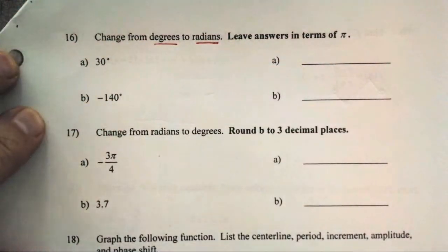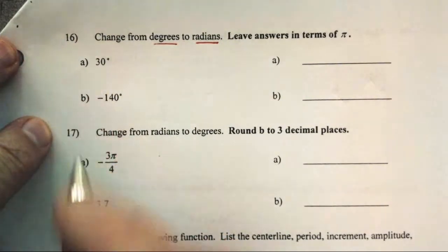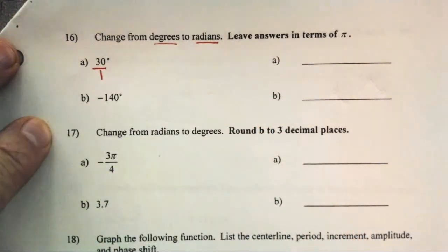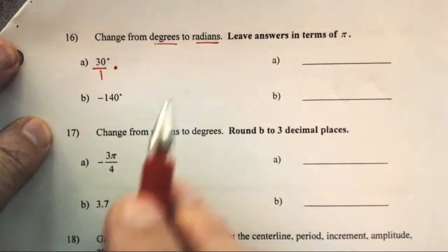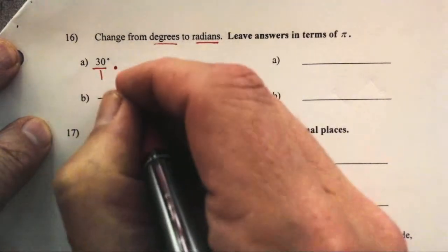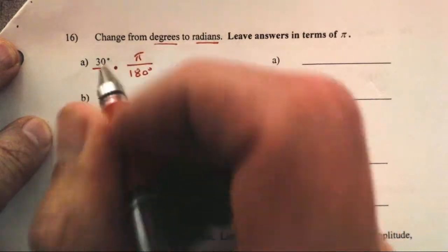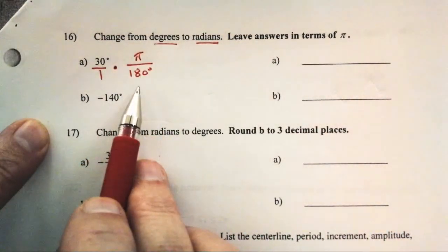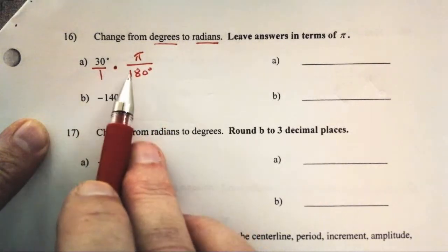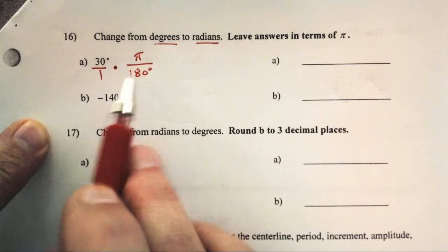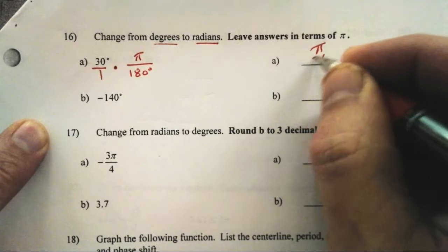We may recognize 30 degrees already as one-sixth pi, and that's great. But the process is: we treat this like chemistry when we want to cancel units. This is 30 degrees, and I want to cancel degrees. I know that 180 degrees equals pi radians, so I'm just multiplying by 1. The degrees cancel and I'm left with radians. 30 divided by 180 is 1/6 pi, or pi on 6.